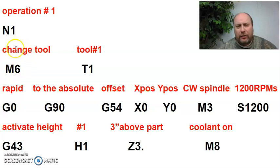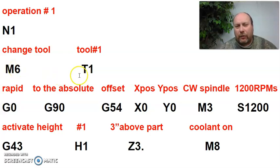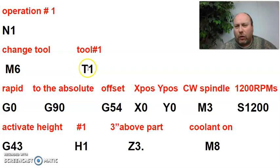The second item is M6. Now there's an M-Code for you. M6 means you want the machine to change the tool. You're saying: hey, machine, CNC, I want you to change a tool. It responds: what tool do you want? I want you to change it to tool one. So you'll have N1 — operation number one — change the tool to tool one. It'll read this in order.